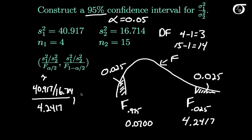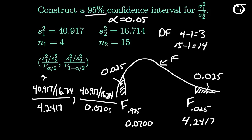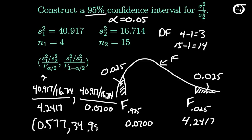The upper bound of the interval is going to be the same numerator, 40.917 over 16.714, the ratio of the sample variances, over 0.0700. And what we end up with, if we don't use any round-off error and take that all the way, is 0.577 and 34.951 to three decimal places.